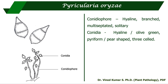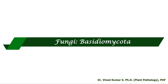Pyricularia oryzae causes rice blast disease. The conidiophores are hyaline, branched, multiseptate, and solitary — they may be produced in groups but are separate, arising from the hyphae. The conidia are hyaline or olive green in color, pyriform or pear-shaped, and mostly three-celled, sometimes two-celled. That is all about the Ascomycota pathogens.